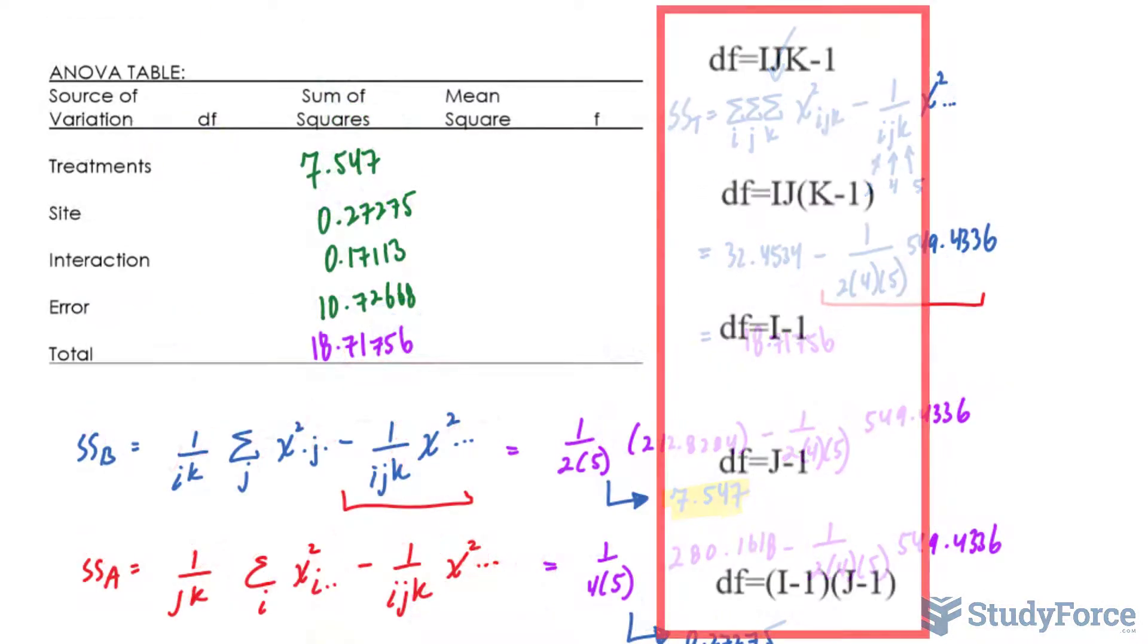To get the degrees of freedom for treatment, we take the number of treatments. There were 4 and minus 1. So I have 4 minus 1 is 3. For site, it's 2 minus 1, so it's 1. The degrees of freedom for the interactions can be found by taking I minus 1 times J minus 1. I being 2, subtract 1, that's 1. And 4 minus 1 is 3. So 3 times 1 is 3.